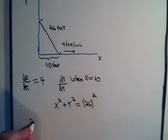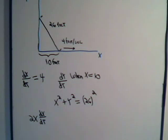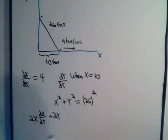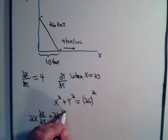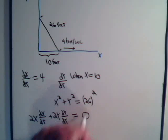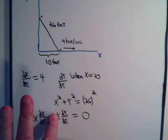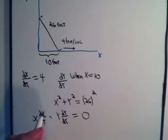We'll have 2 times x times dx/dt, plus 2 times y times dy/dt. This will equal, this is a constant derivative of course, it's going to be 0. We can divide by 2.